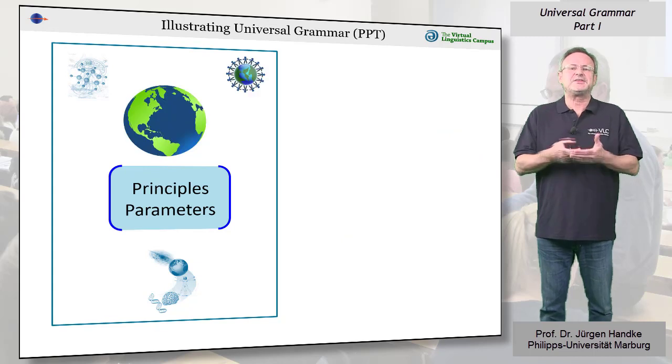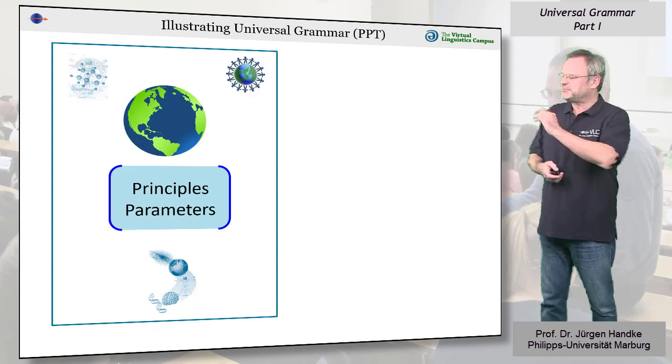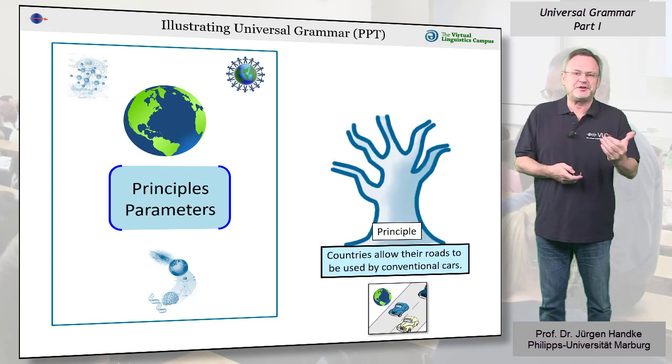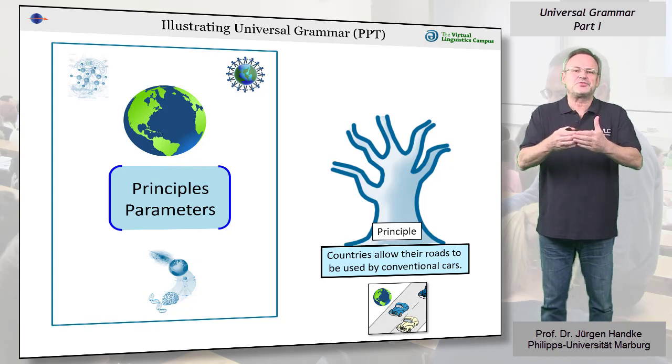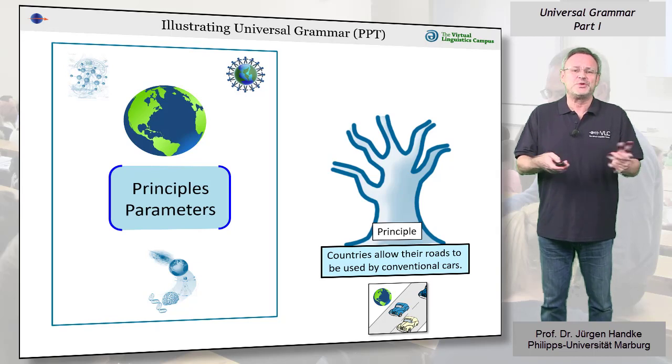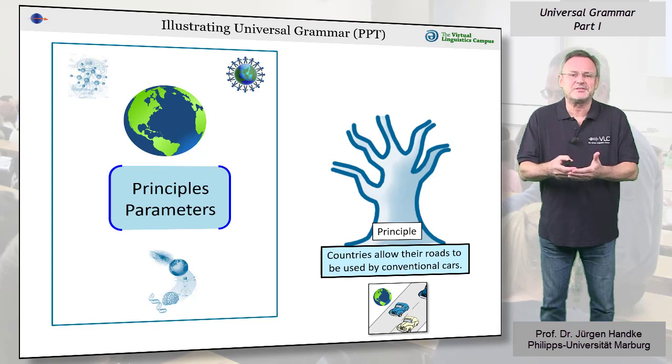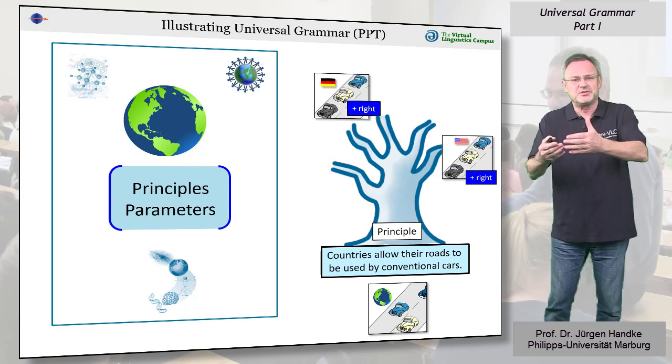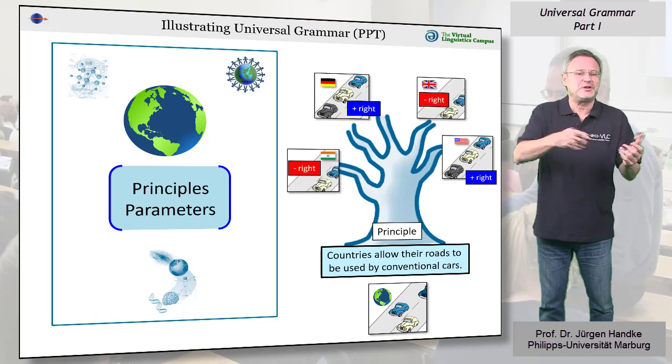Let us look at a non-linguistic example to illustrate this principles and parameters approach. A principle that could be found in our world is that all countries have roads that can be driven on. The question is, on which side? So here we have a parameter that can be associated with each country. Plus right for right-hand traffic and minus right for left-hand traffic.